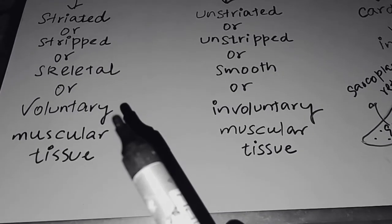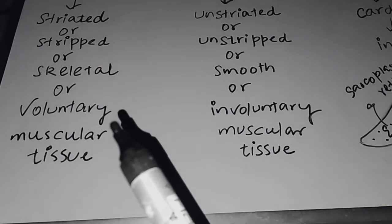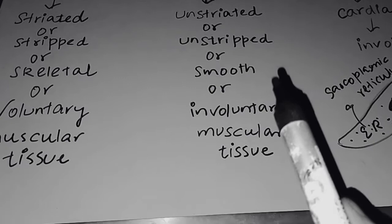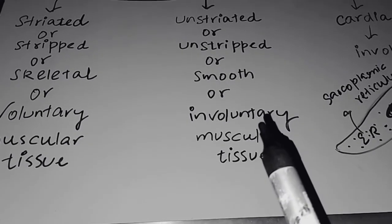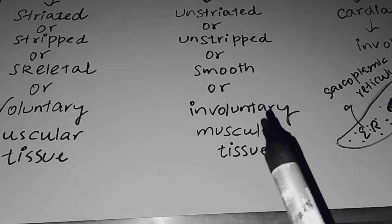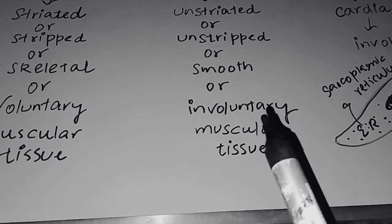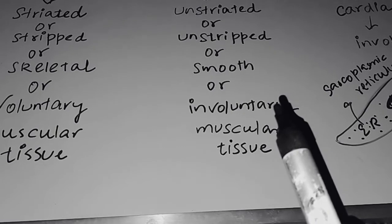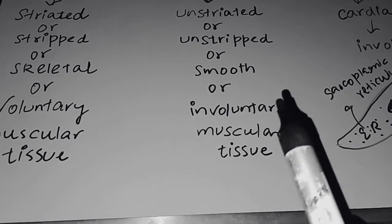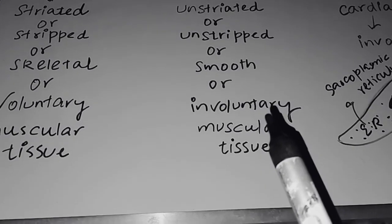Unstriated, smooth or involuntary, these muscular tissues are in visceral organs. The movement, for example the stomach shows some type of movements or other visceral organs, that is not under the control of an organism. That's not under the will of an organism. They show contraction without the will of an organism.